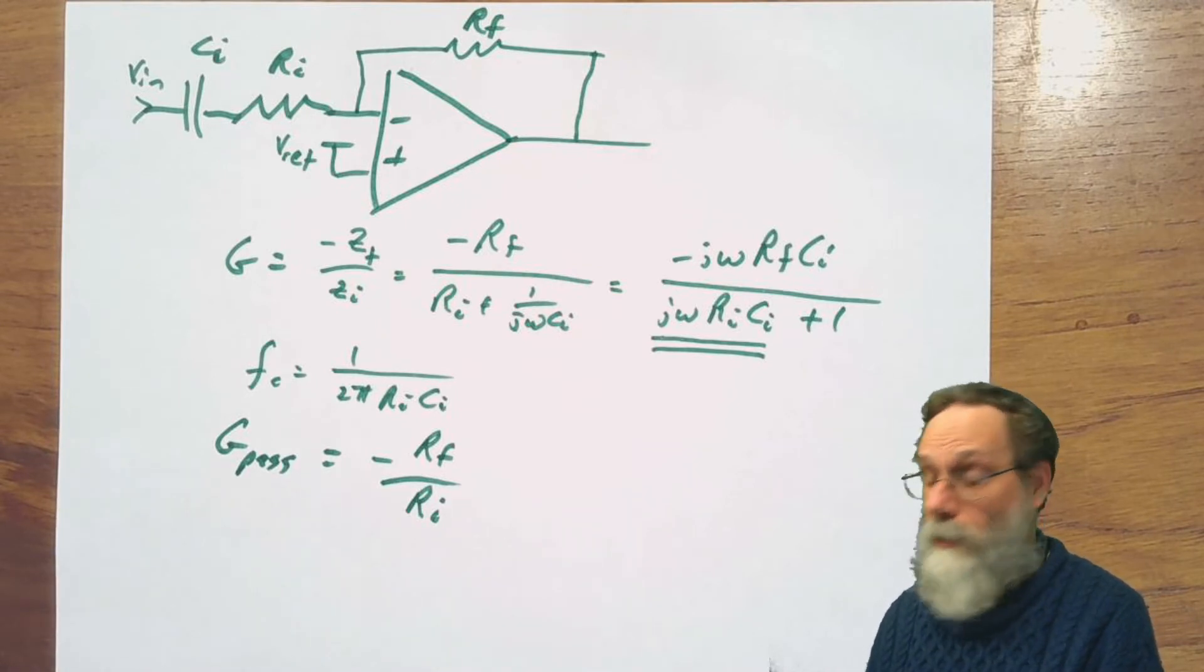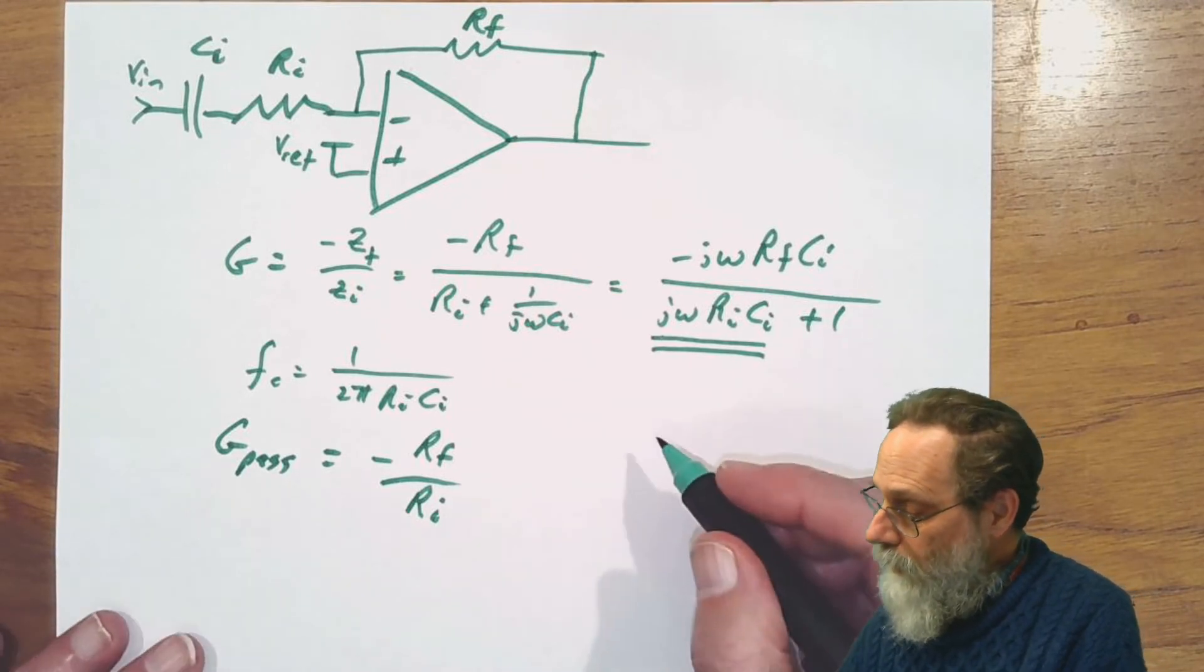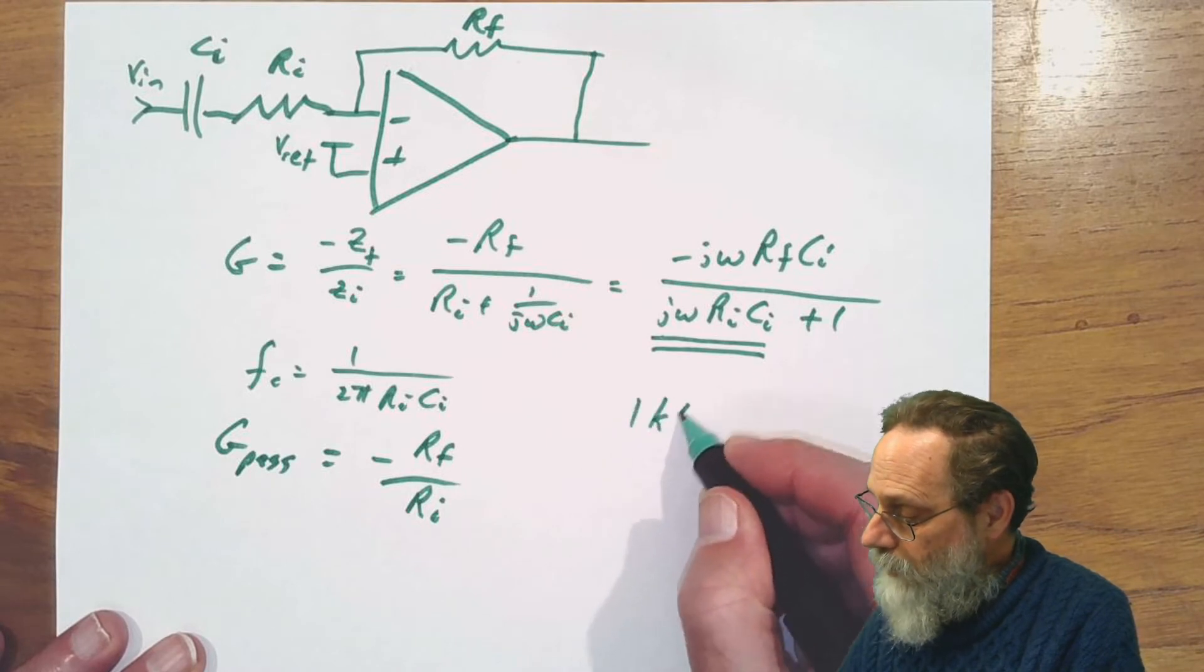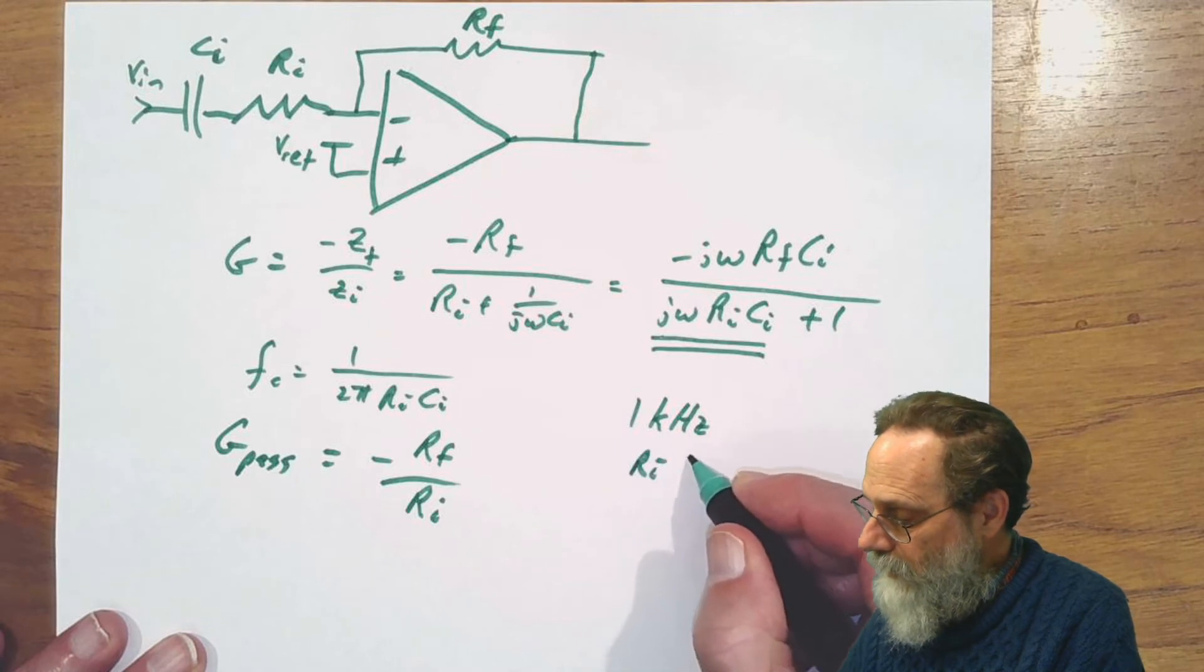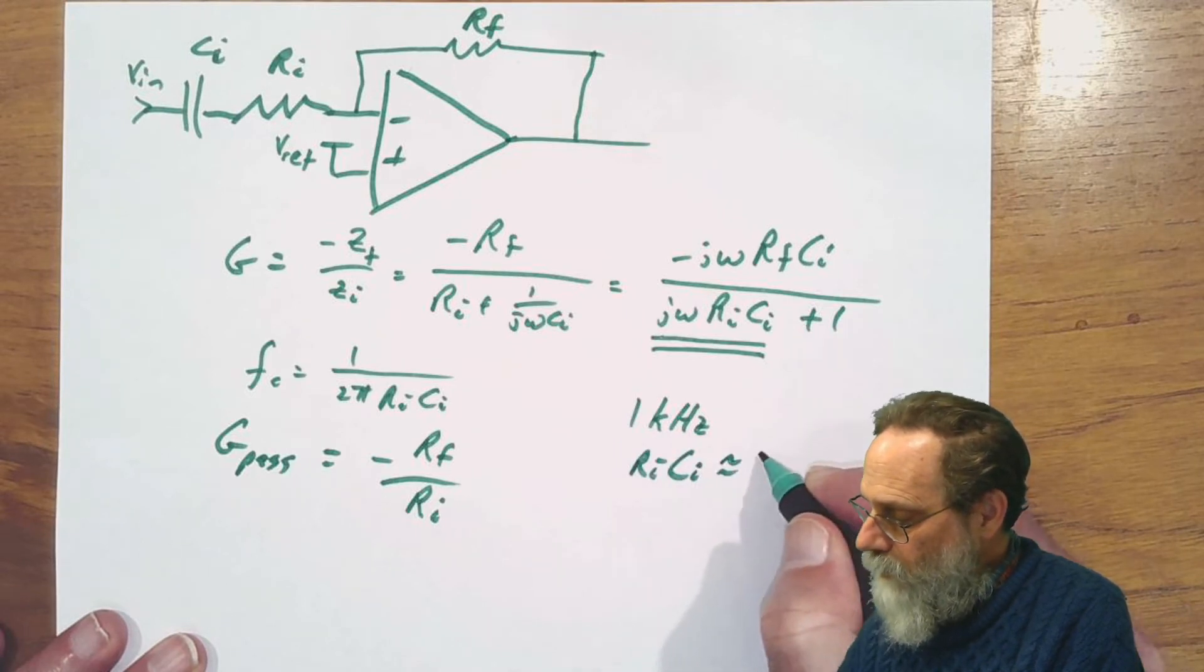Let's do an example of this. Let's say we were looking for a corner frequency of about one kilohertz. One kilohertz would give us a time constant, RI CI, of about 159 microseconds.